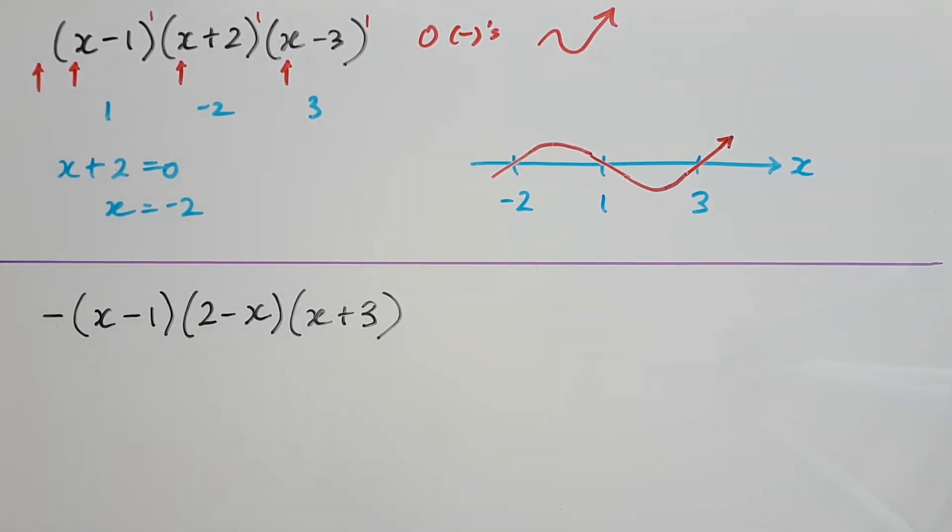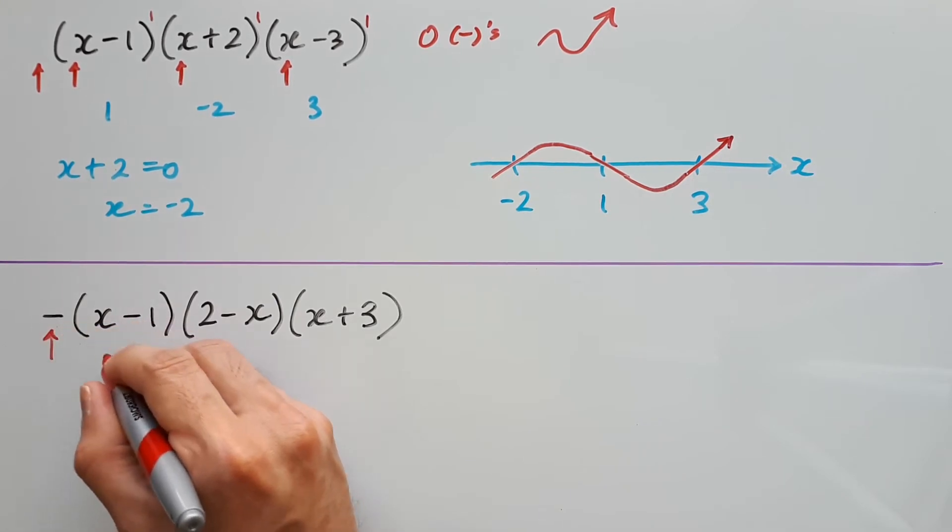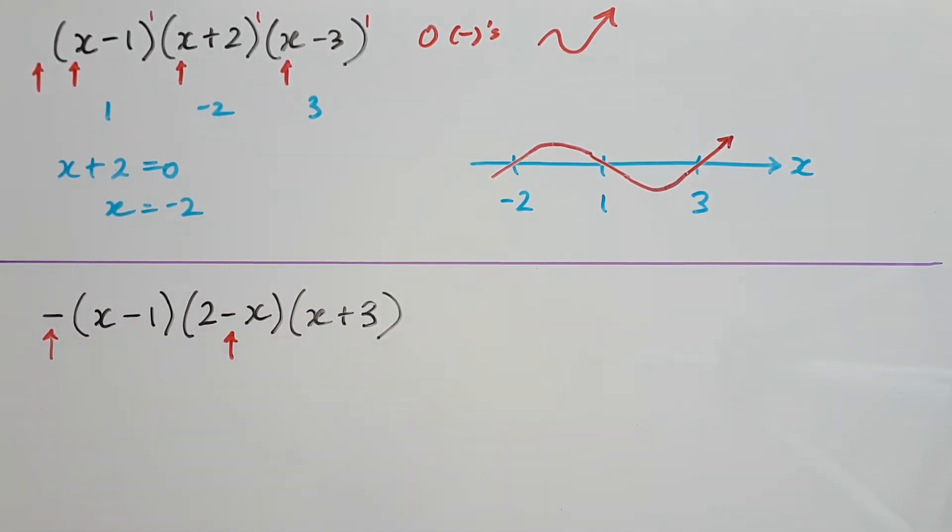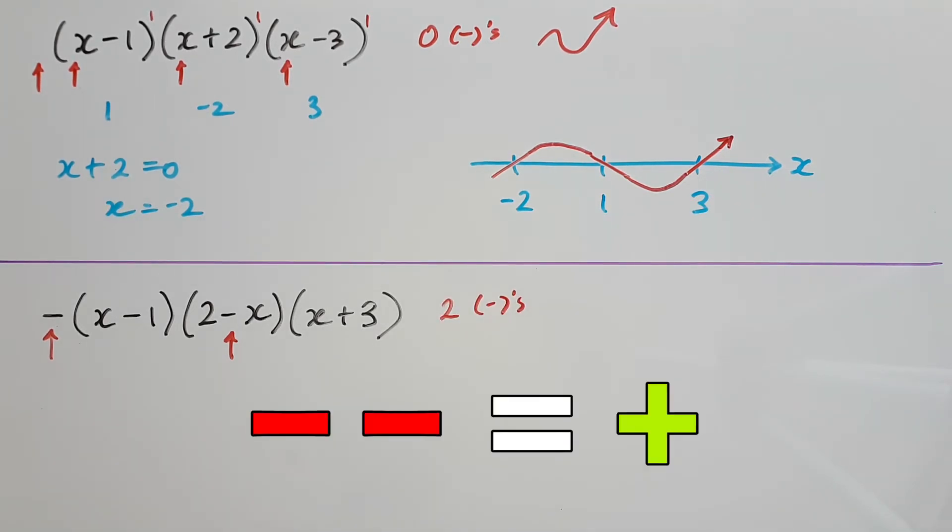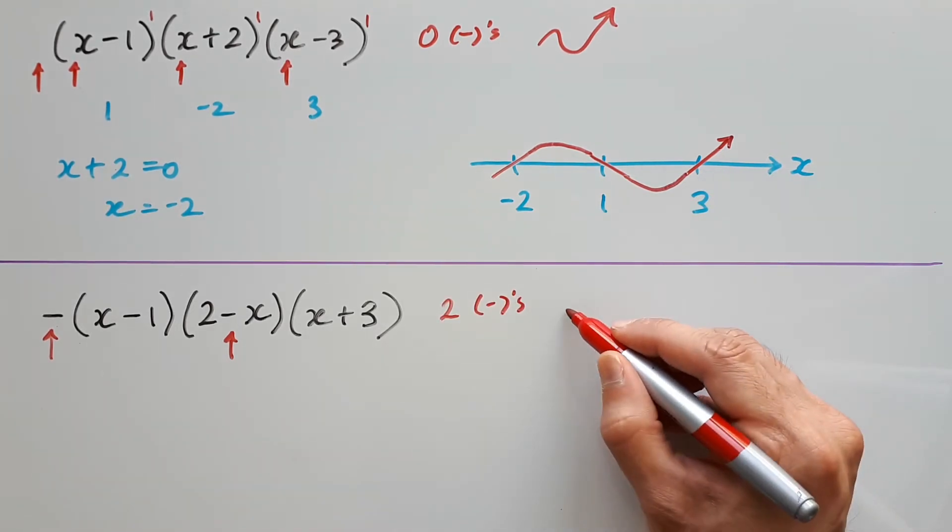For our next question, there seems to be one negative outside and one negative on the x inside, for 2 minus x. So there are two negatives in total, which when put together is still a positive. So the graph is going to finish up for this as well.